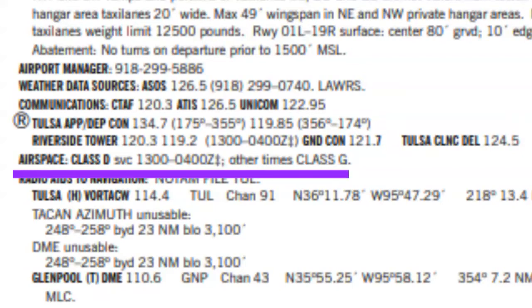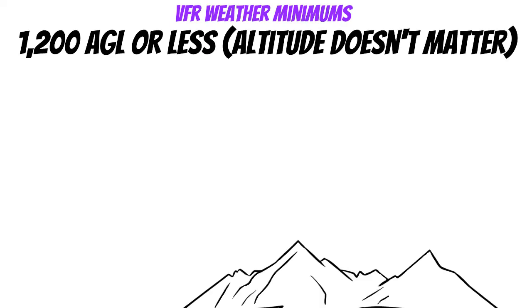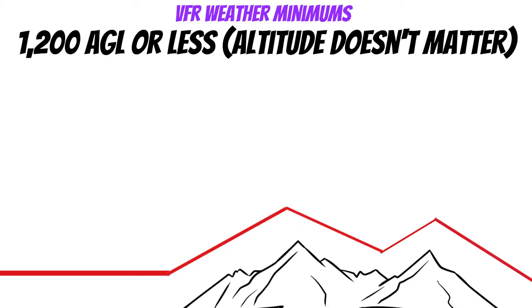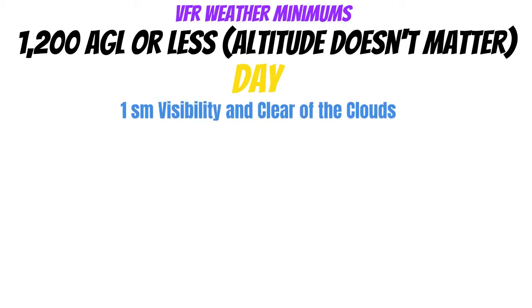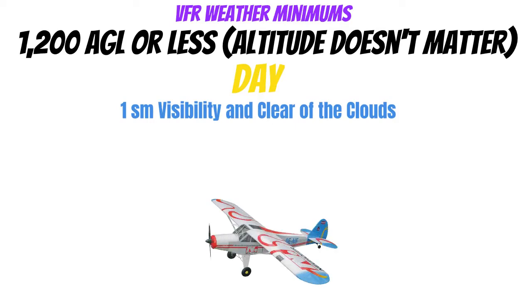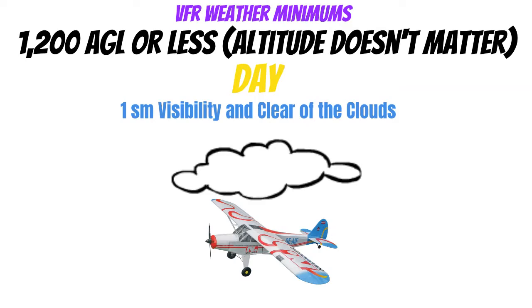Now let's take a look at the part of Class Golf that everybody hates: weather minimums. I'll try to make this as easy to remember as possible. First, let's look at the Class G weather minimums for 1,200 feet AGL or less — and on this one, altitude doesn't matter as long as you're 1,200 feet from the surface. In Class G airspace within 1,200 feet of the surface, during the day all you need is one statute mile visibility and clear of the clouds. Clear of clouds simply means you can fly right next to a cloud as long as you don't touch it.